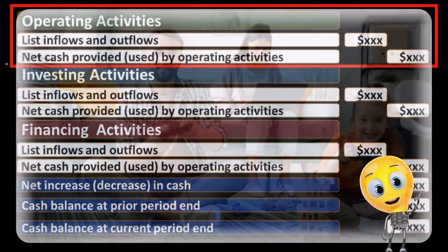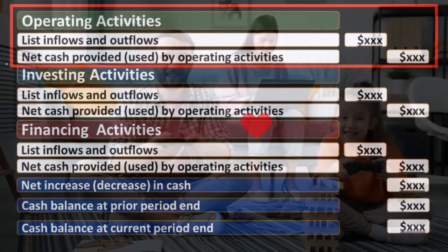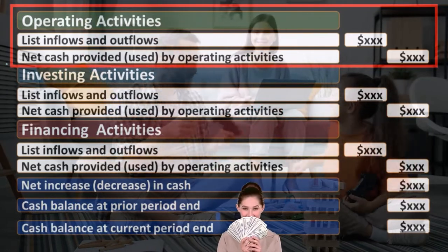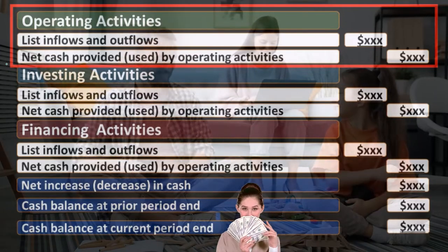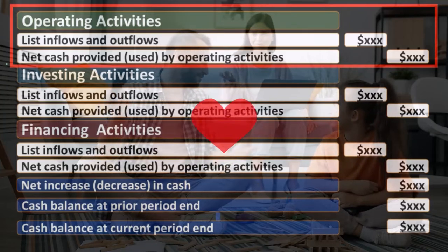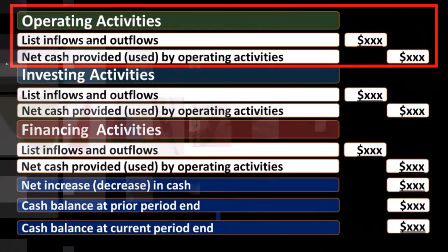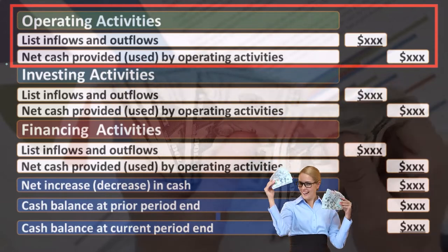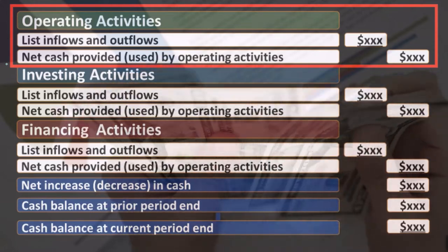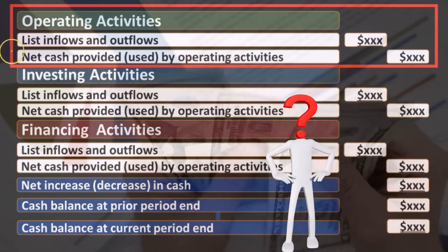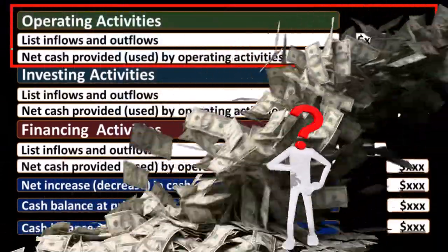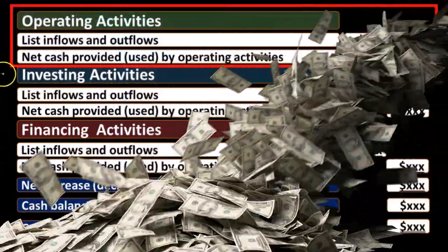Why are the operating activities going to differ? The operating activities have to do with the income statement — you can think of it as the income statement being reformatted to a cash flow statement versus an accrual statement. The income statement is on an accrual basis: we recognize revenue when it's earned rather than when cash is received, and expenses when incurred rather than when cash is paid. Converting that to a cash basis is what the operating activities section does.